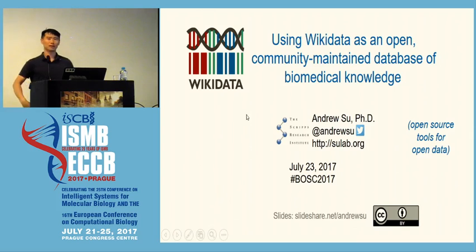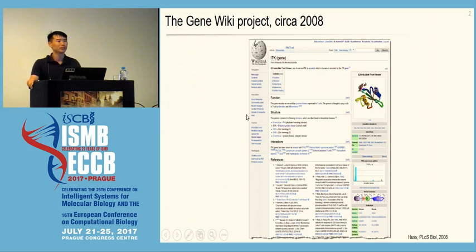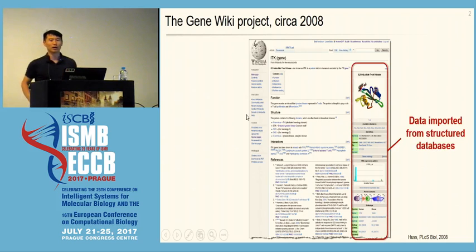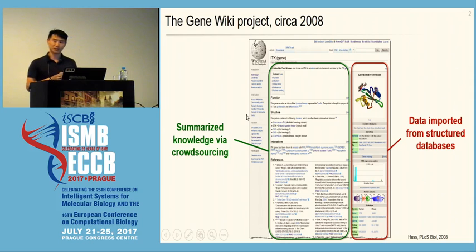Thank you. Today I'm going to tell you about using Wikidata as a community-maintained knowledge base. The story starts back in 2008 when we initiated the Gene Wiki project. The goal was to create a crowdsourced review article for every human gene, done in the context of Wikipedia. We created about 10,000 gene-specific articles, where the right side had data imported from structured databases, and the hope was the left side would be filled in by domain experts with summarized knowledge of that gene's function.